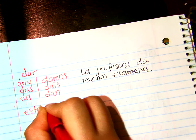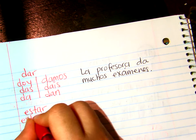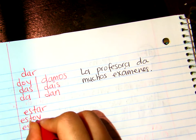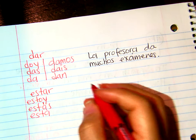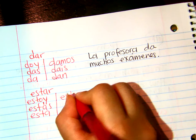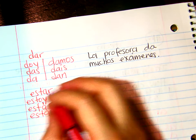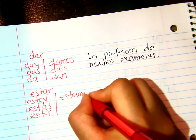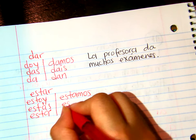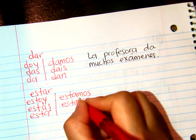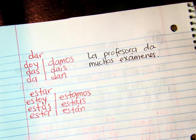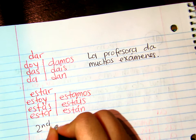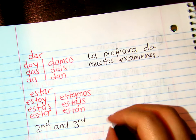Estar. Yo estoy, tú estás — con acento, él está, nosotros estamos, vosotros estáis, ellos están. So here we need to remember that the second and third person forms have accent marks.